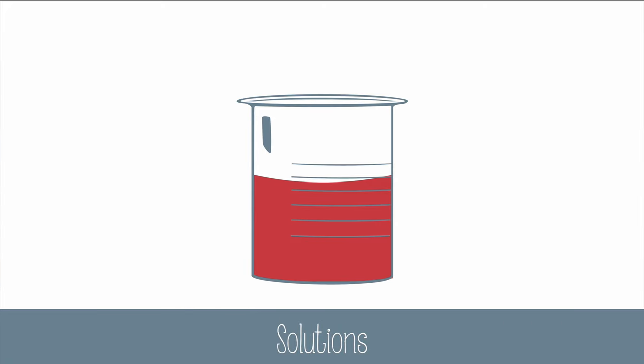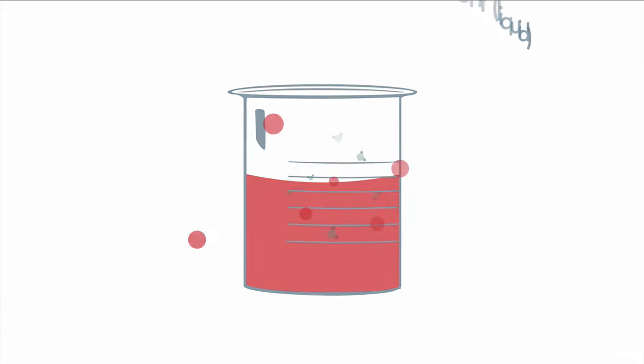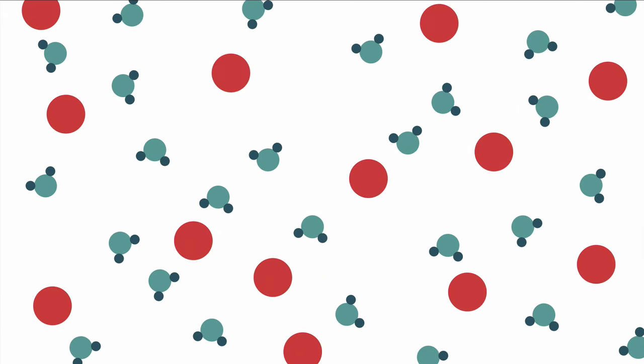A solution is made of a solute, which is a solid that is dissolved in a solvent, which is a liquid. Together, the solvent and the solute create a uniform solution. Let's imagine I dissolved a packet of Kool-Aid powder into water. In this Kool-Aid solution, there are particles of Kool-Aid, which are the solute, and particles of water, which are the solvent. The water dissolves the Kool-Aid to create this solution.